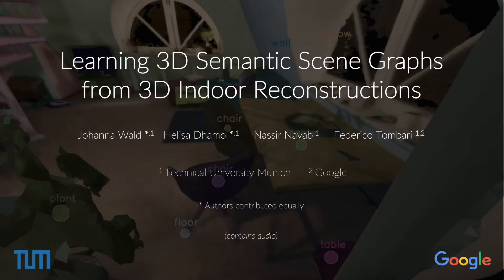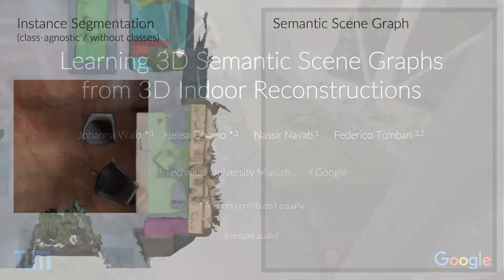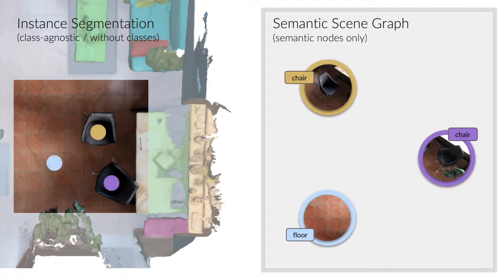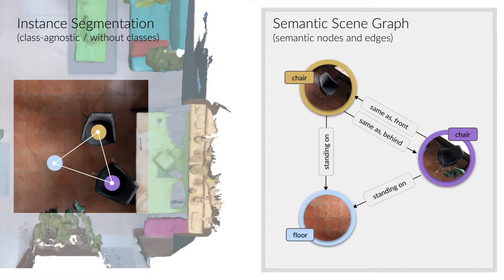In this work, we explore 3D semantic scene graphs, where the nodes are the objects in a scene, and edges are their semantically meaningful relationships.